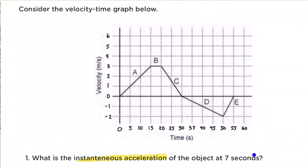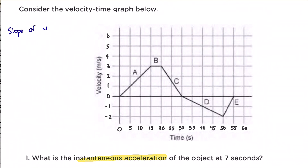Since we are given a velocity-time graph and we're interested in solving for the acceleration, we need to obtain the slope of this velocity-time graph to get the acceleration. Recall that the slope of a velocity-time graph is acceleration.